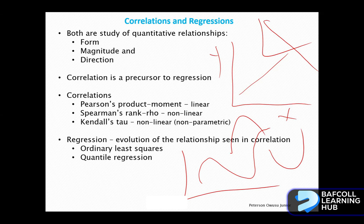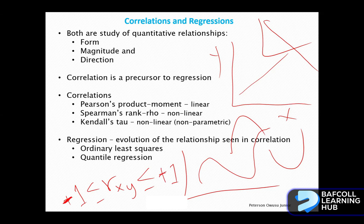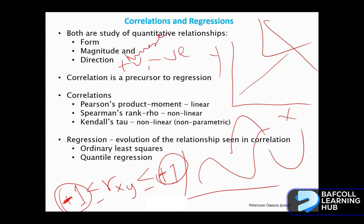The magnitude is how strong the relationship is — whether the relationship is weak, moderate, or strong. There are arbitrary numbers assigned to what level of magnitude constitutes weak, moderate, or strong, but they will fall within a range of correlations between negative one and positive one, which includes zero. As you go to the extremes of these numbers, you are increasing the strength of the relationship. At the exact extremes, you can have a perfect relationship. The direction is whether the relationship is positive or negative.